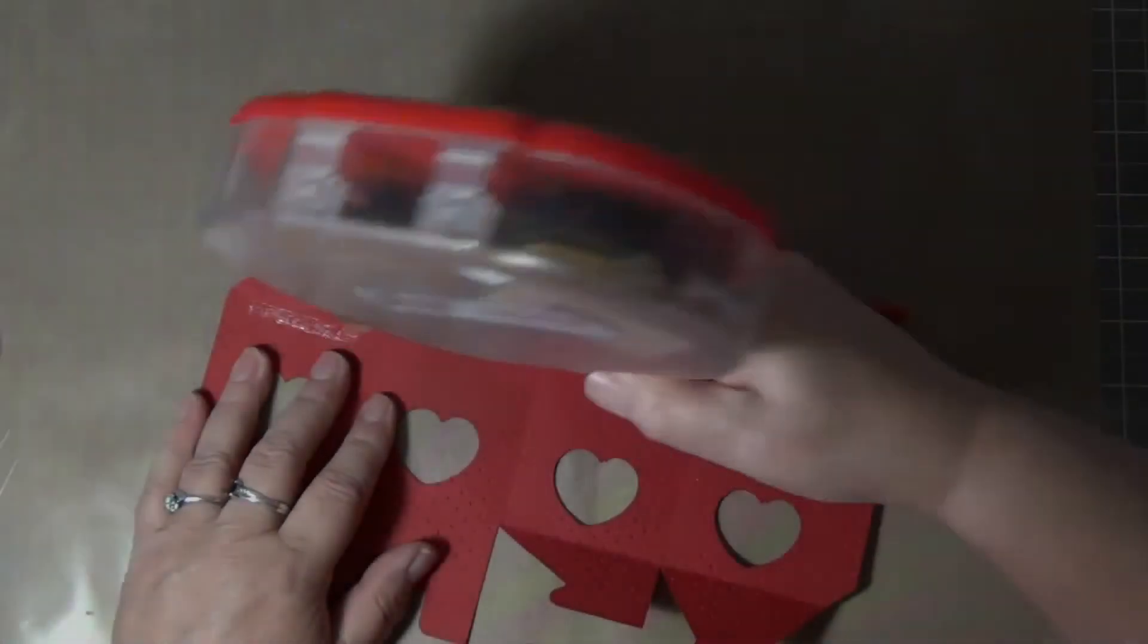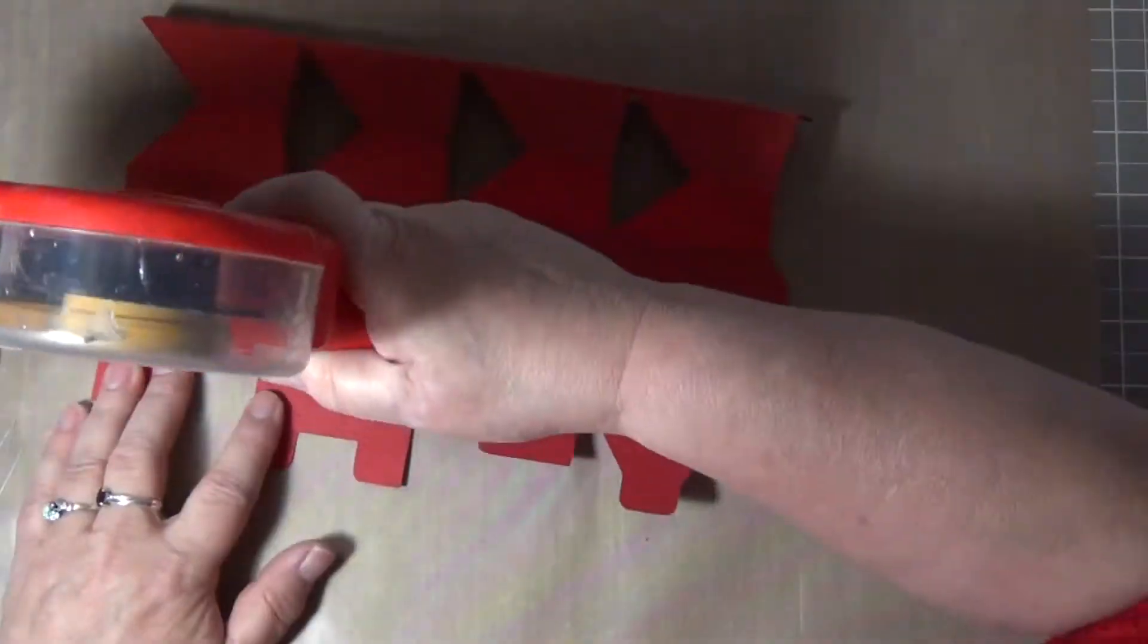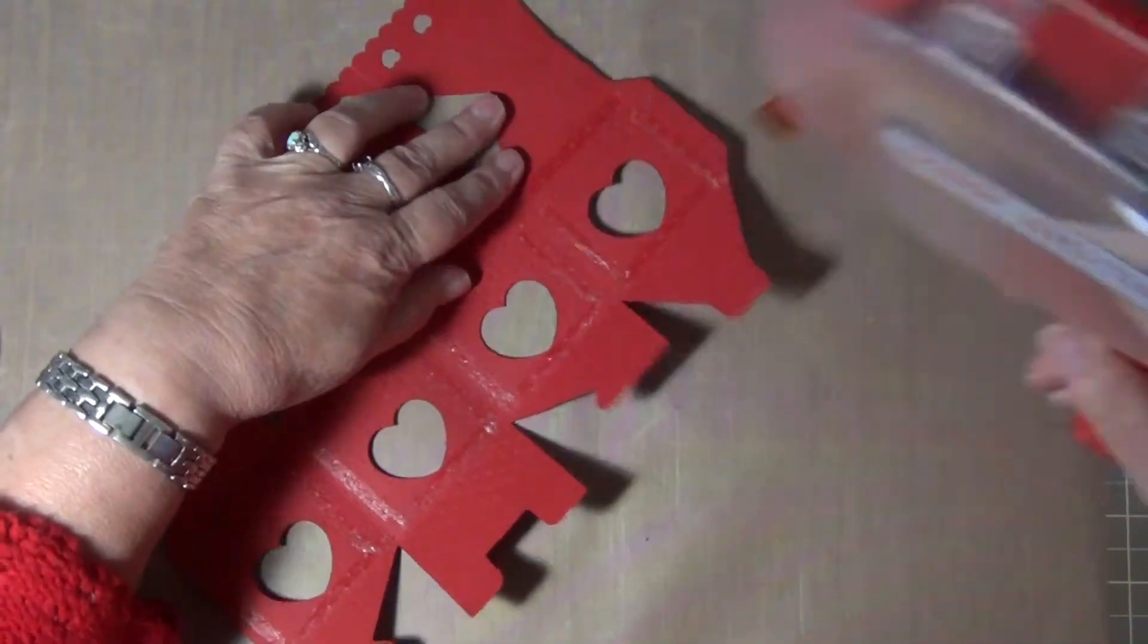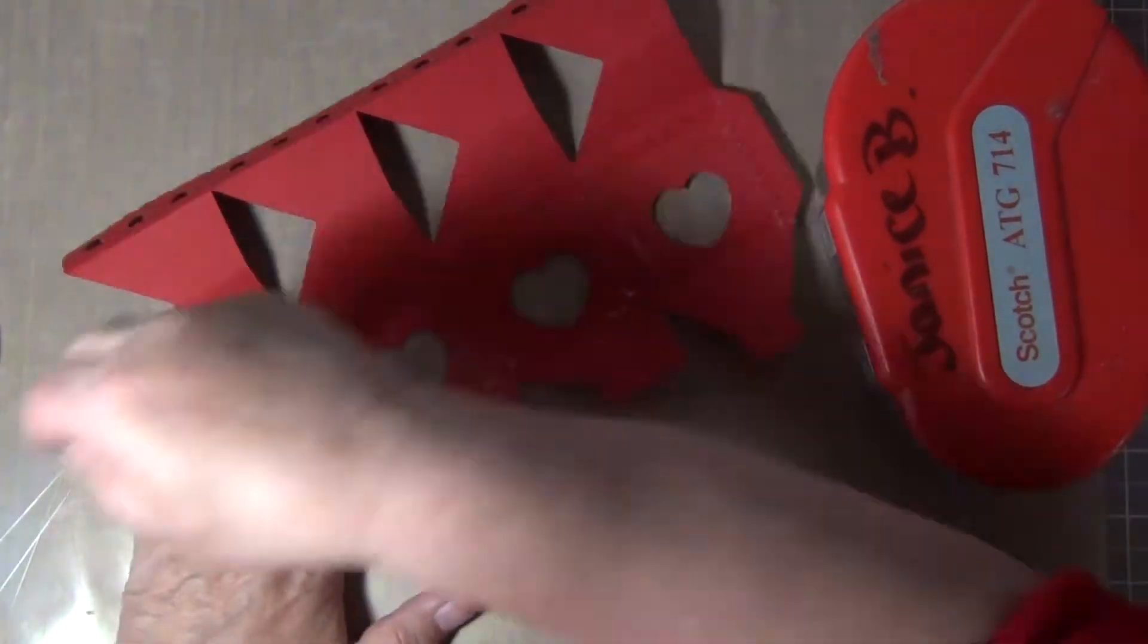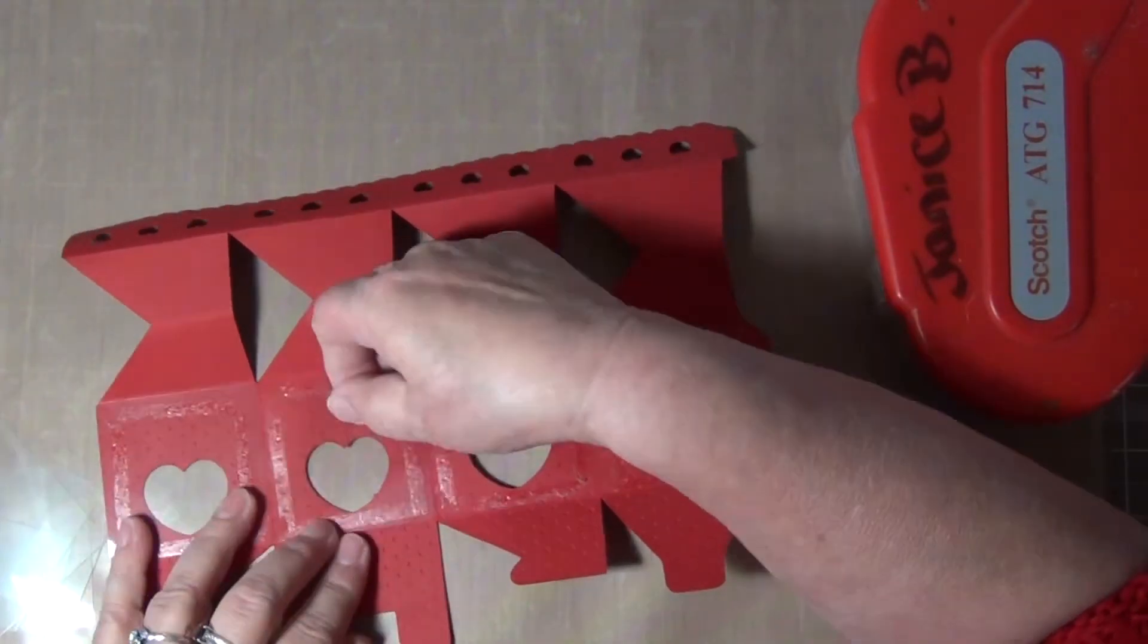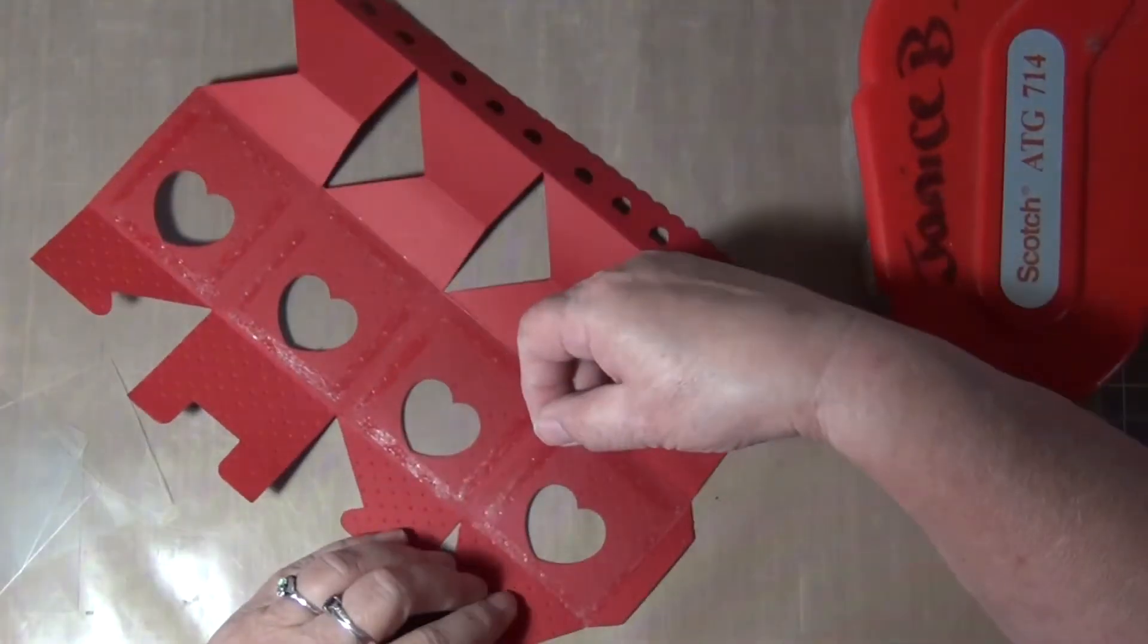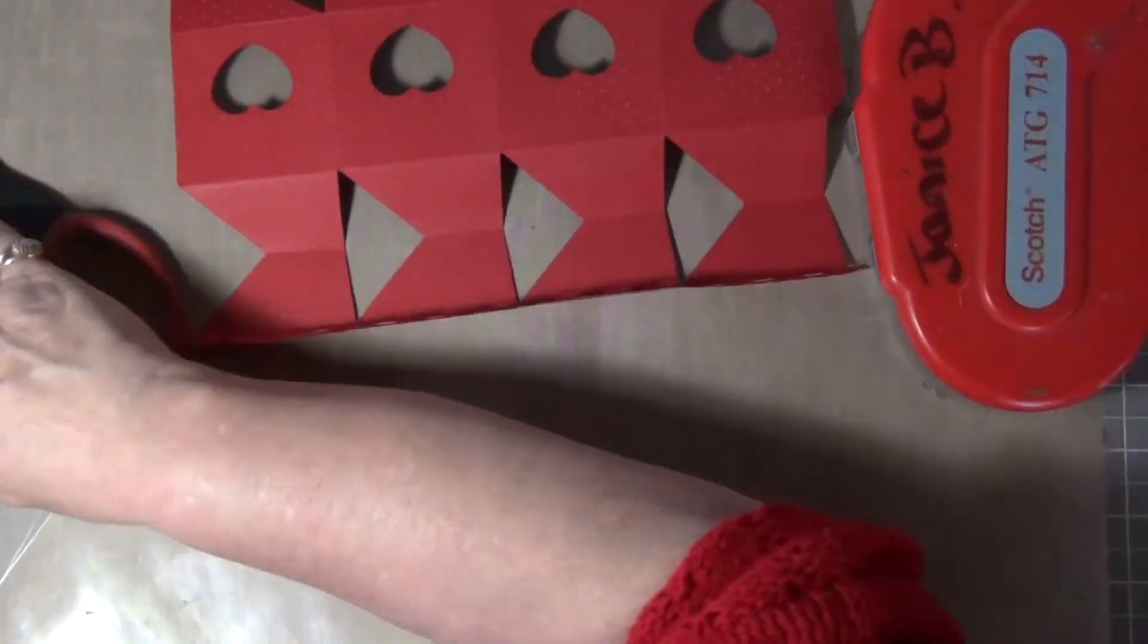Now this is the Valentine's box and what I wanted to do is cover all of the windows with transparency. You could use a transparency or you could use a contrasting color to cover up the window so that your goodies, you can't see the goodies inside of the box. I just use my regular ATG gun to attach the transparencies and you can cut the transparencies using your cutting machine because those files are also included in this project.